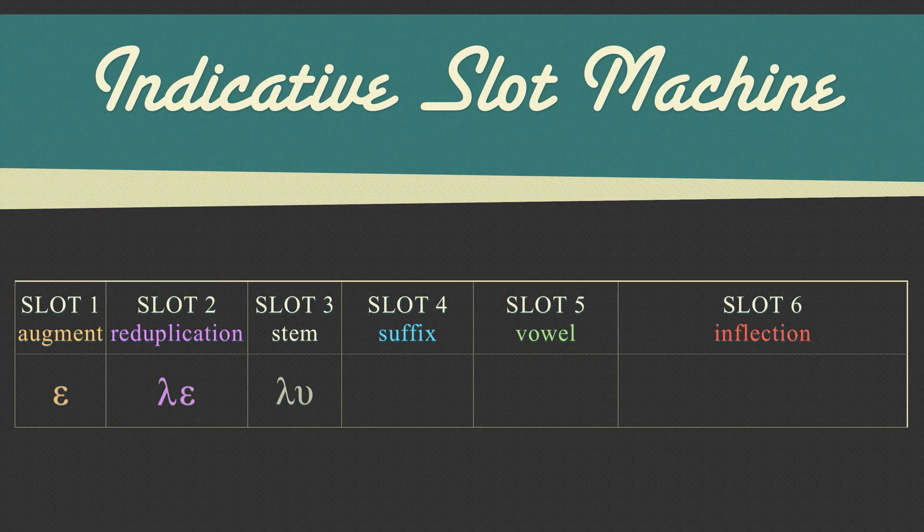Slot four is a suffix added after the stem. There are six different possible suffixes that can be added. Each of them identify particular tense and voice combinations.